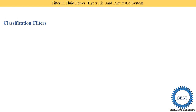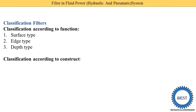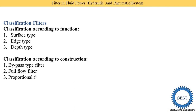Now we study the classification of filters. Filters are classified according to two categories. The first category is according to function: surface type, edge type, and depth type. The second category is according to construction: bypass type filter, full flow filter, proportional flow filter, and indicator type filter.